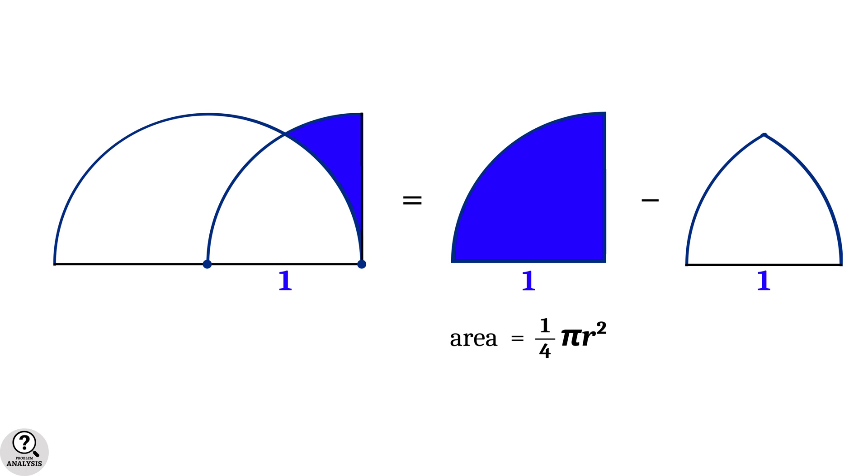But we have radius equal to 1 unit. So, the area will be 1 by 4 into pi into 1 square that is equal to pi by 4 square units.